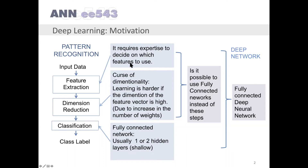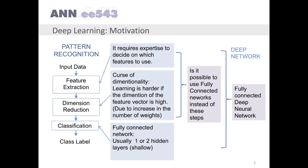The question is: is it possible to use fully connected networks instead of these feature extraction and dimension reduction steps? In that case, it is called a deep network — a fully connected deep neural network. But there are several problems if we increase the number of layers in a multi-layer perceptron, so it cannot be used as a deep neural network in practice.